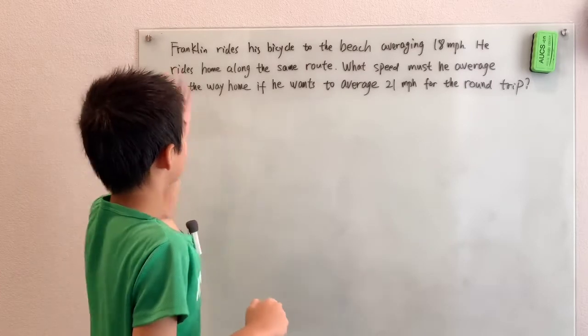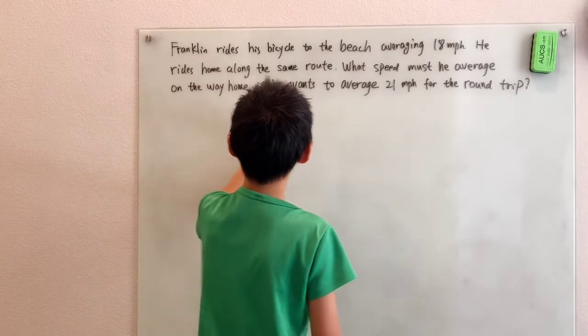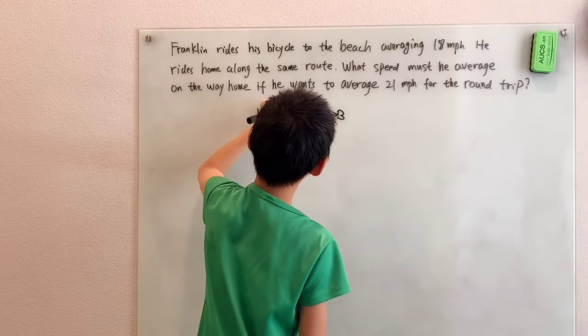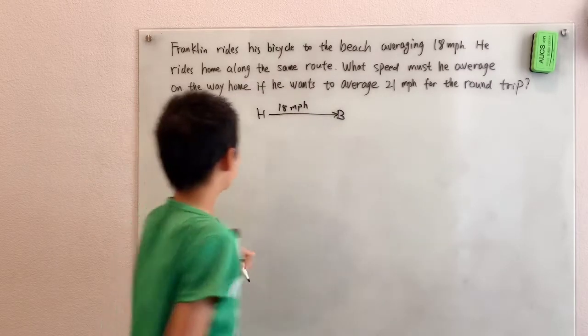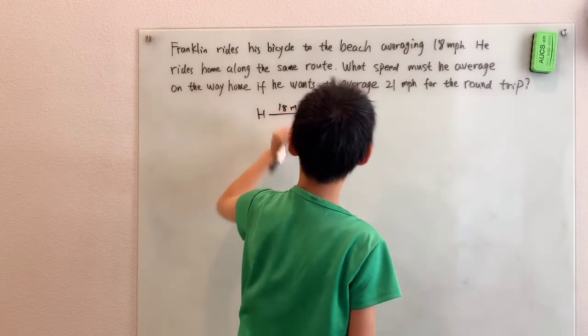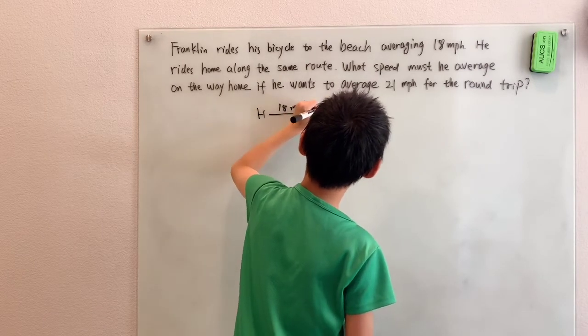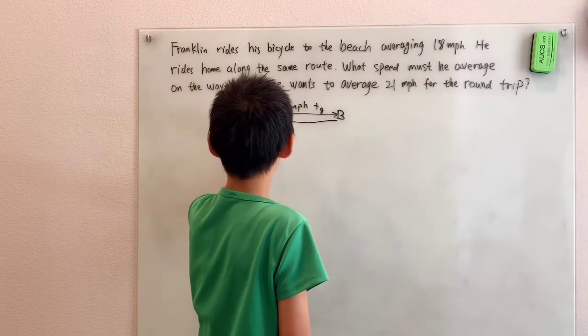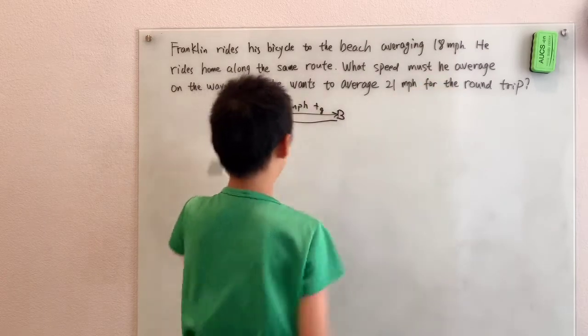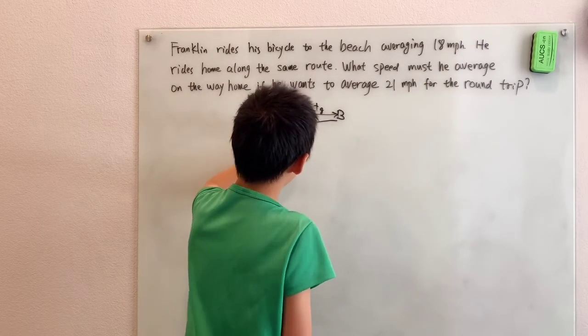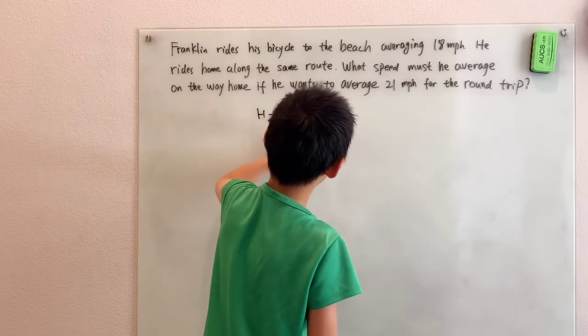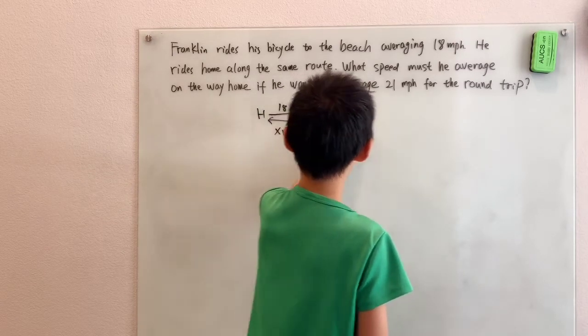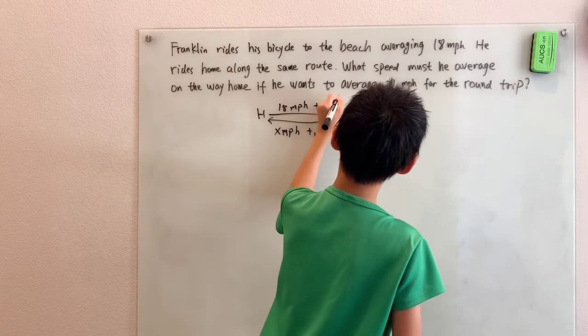So in this problem, first we know that from his home to the beach he averages 18 miles per hour. I have to say his time going there is TG, T going. And then coming back, what speed should be average? I'm going to say X miles per hour and time coming back is TB.